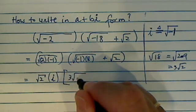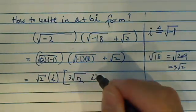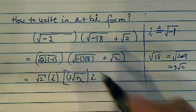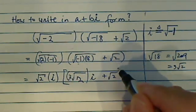So let's write it out: 3 radical 2, there's i here because of the minus 1, and then plus 2 here.